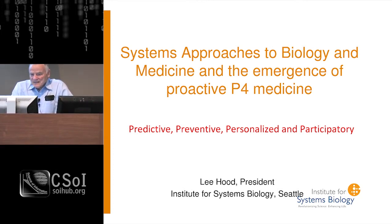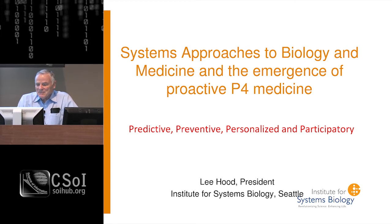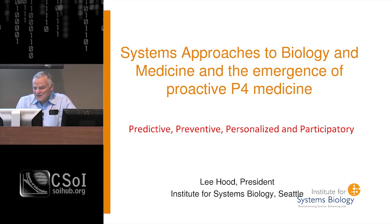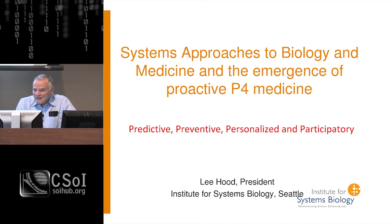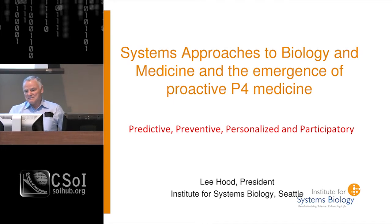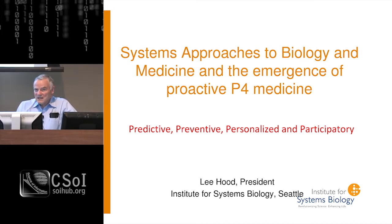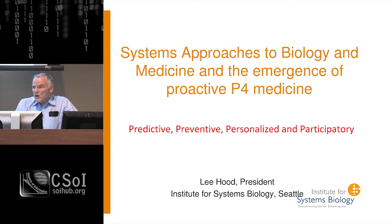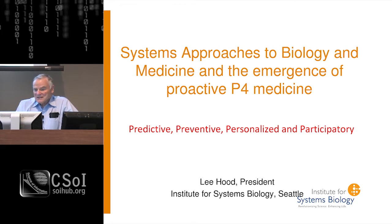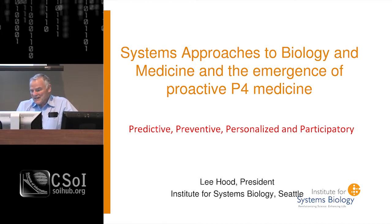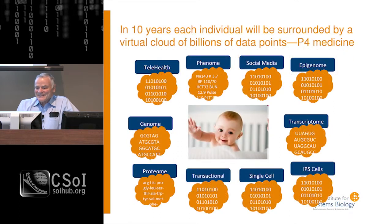What I'd like to talk about is how we think about systems biology. From many of your points of view, what systems biology does that's really important is creates data that's essential to deciphering biological complexity, and especially it gives us the tools for dealing with biological noise. I'm going to talk about the focus we've had for the last five or six years on a systems approach to disease, which has led to what I think is going to be a real revolution in medicine. I call it P4: predictive, preventive, personalized, and participatory.